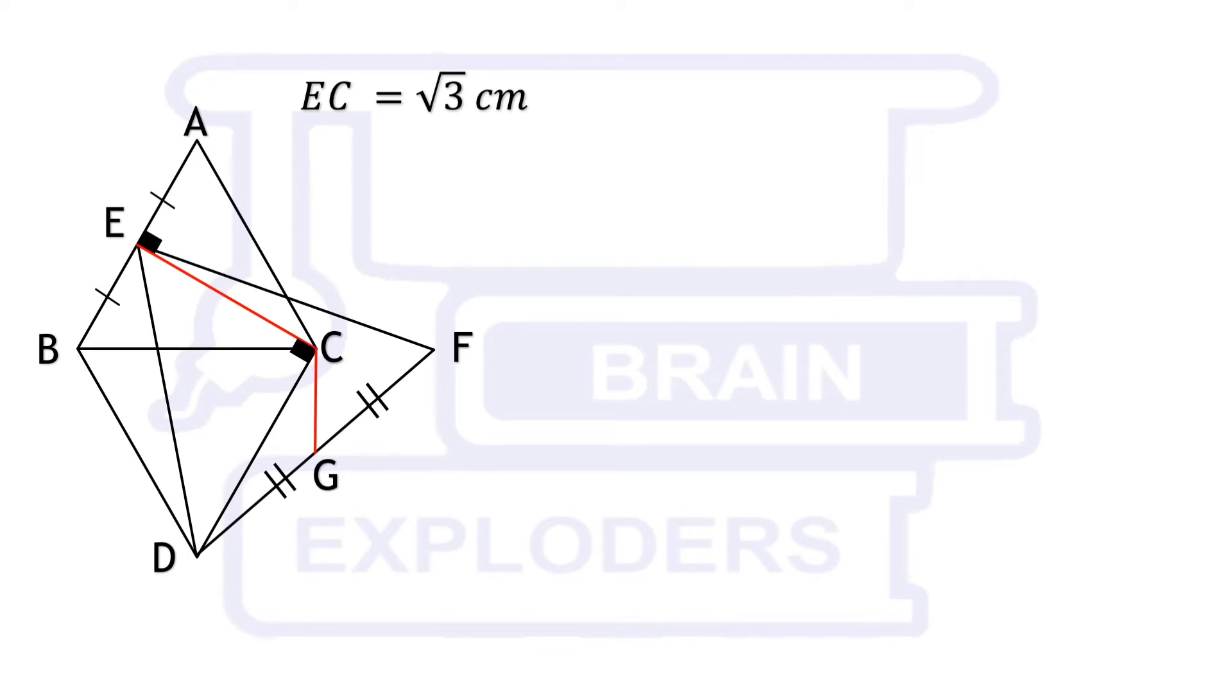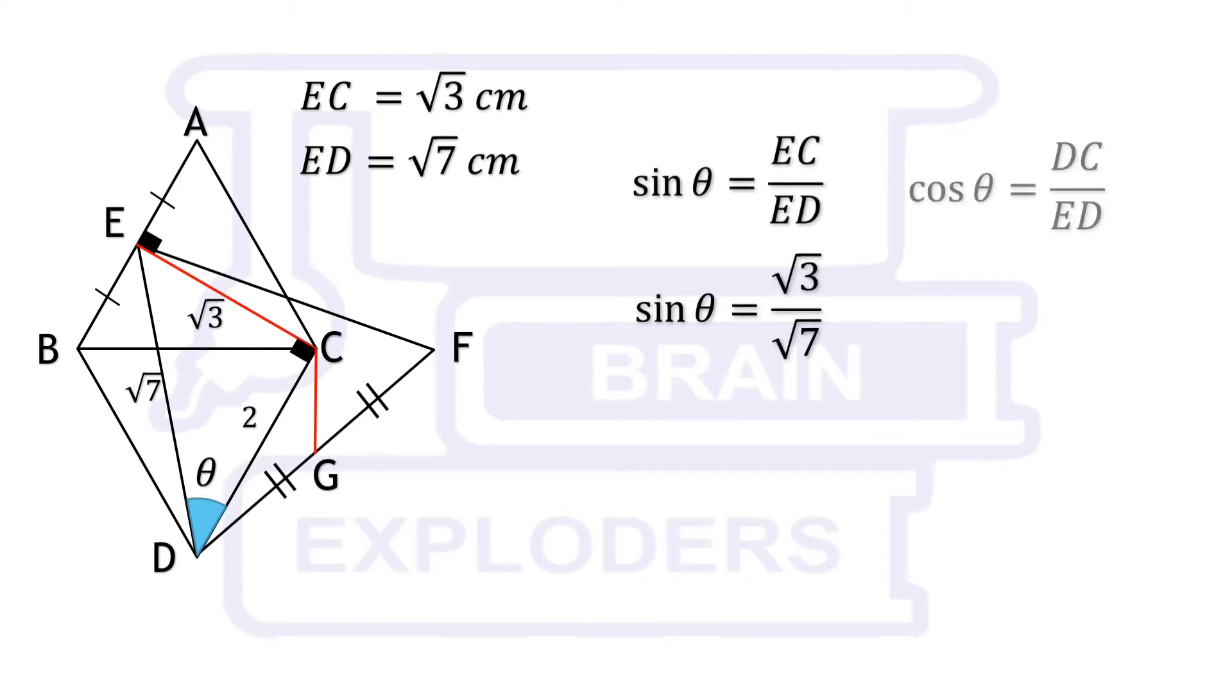If we assume that angle EDC is theta then we can find the values of sin theta and cos theta using the sides of the triangle. We have sin theta equals to root 3 over root 7 and cos theta equals to 2 over root 7.